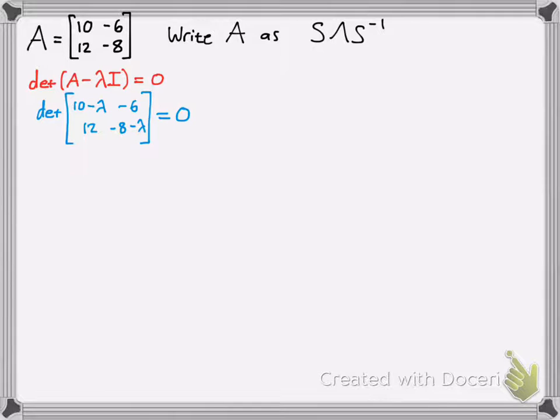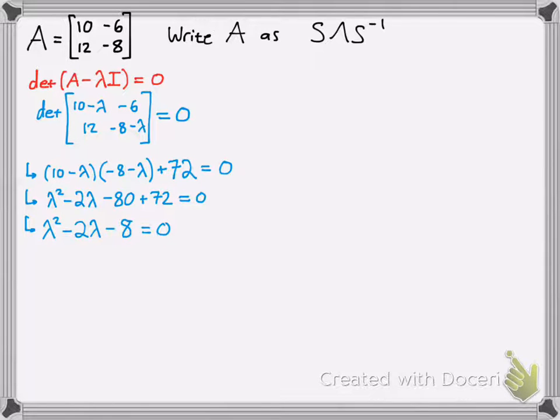So you do your eigenvalue stuff. And when you do the determinant, you should get lambda squared minus 2 lambda minus 80 plus 72 equals 0. Simplify that factor, and you should get lambda 1 and lambda 2 to be negative 2 and 4.